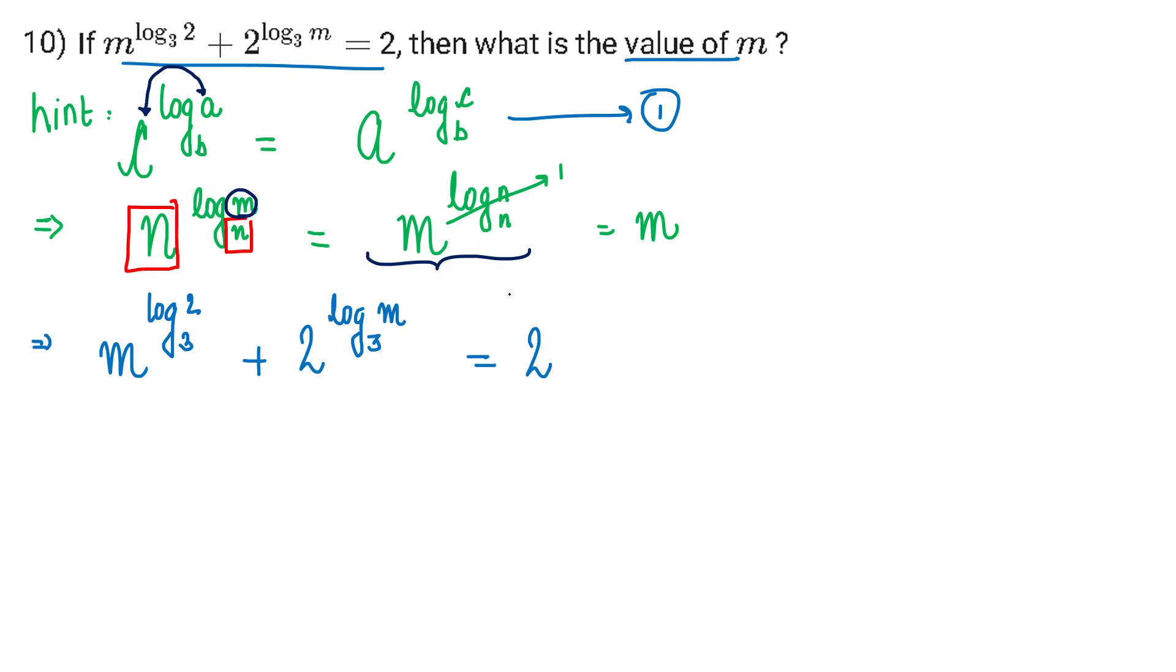So that was the theory behind this question. Notice that 2, 3, and m appear in different positions, which I can change using equation 1. But which one should I transform - should I bring 2 or m?